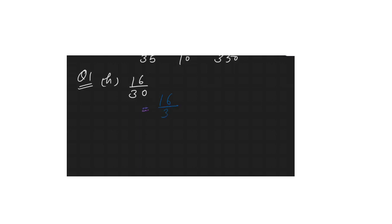For 16/30, multiplying by 2: 16×2 = 32 and 30×2 = 60, giving 32/60. For another, multiply by 10: 16×10 = 160 and 30×10 = 300, giving 160/300. These are two equivalent fractions of 16/30.